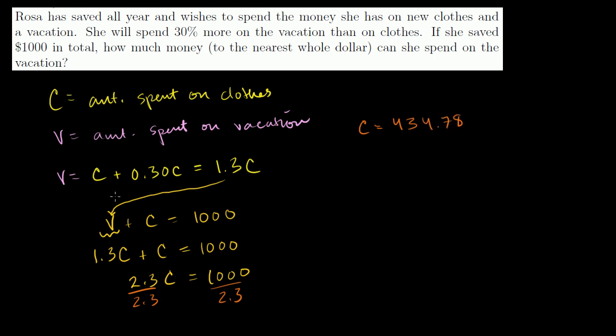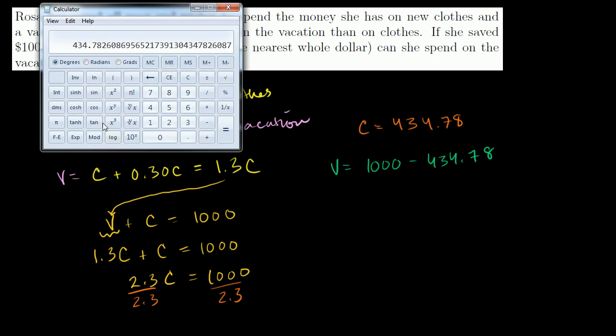So that's the amount she spends on clothes. The rest of her money is going to be spent on a vacation. So her vacation is going to be 1,000 minus this. So her vacation expenditure is going to be 1,000 minus 434.78.